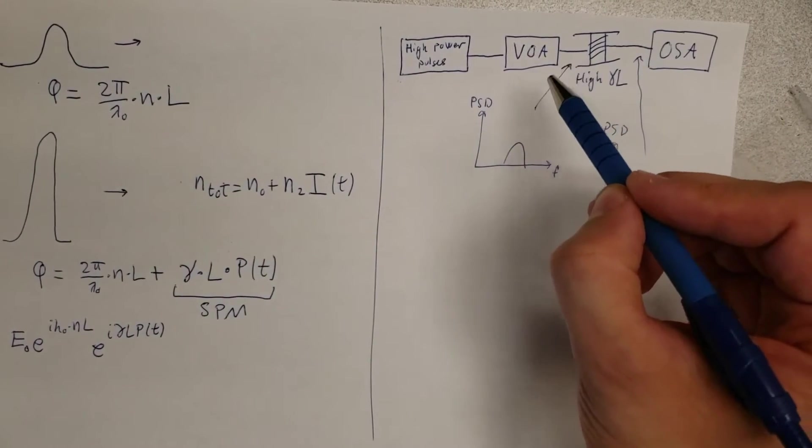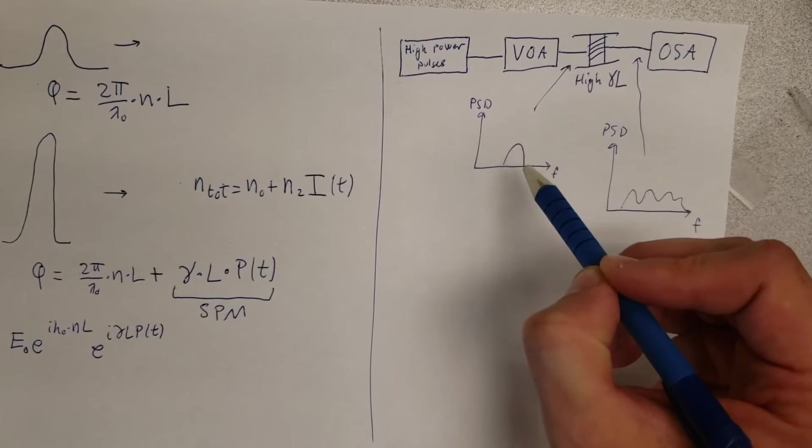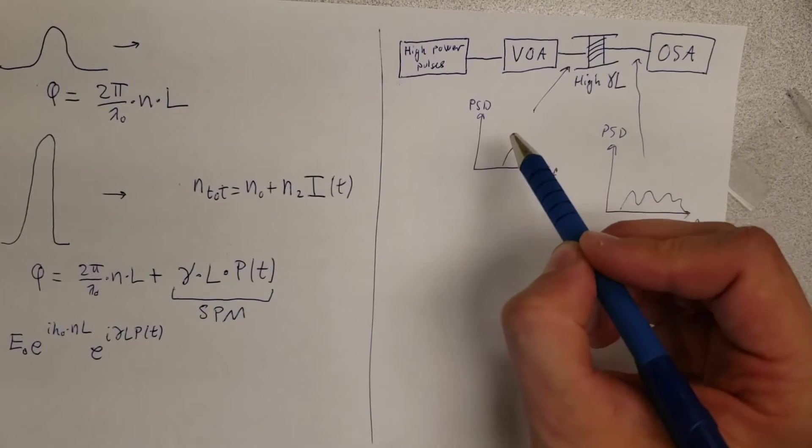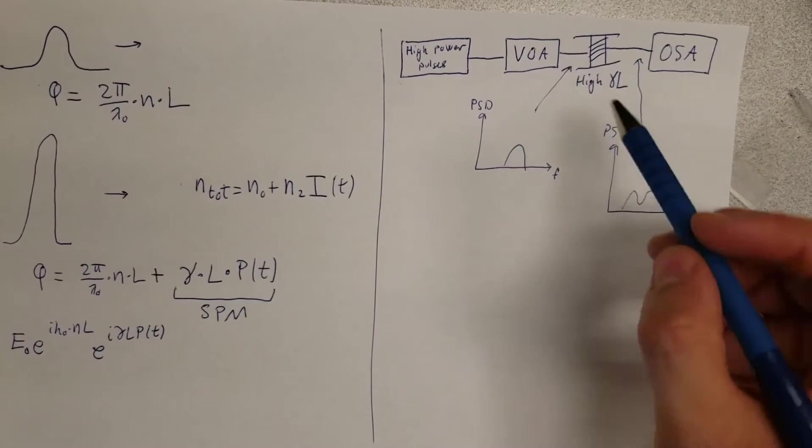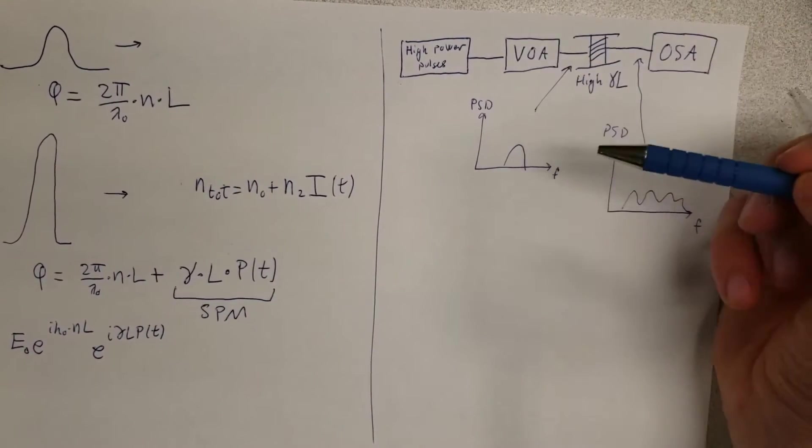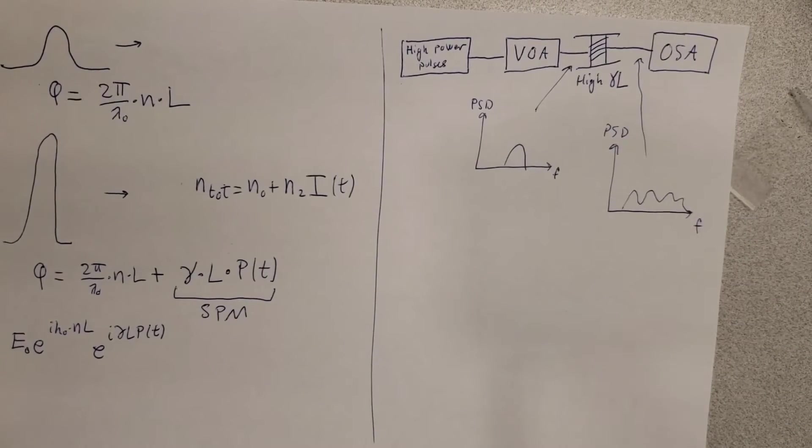So if you look at the beginning of the fiber, we should see just a spectral shape that depends on the shape of the pulse. But after we send that through the medium, we should see that being broadened out more and more as we lower the attenuation when we look at the OSA. Okay, so let's go take a look at that.